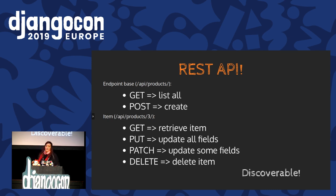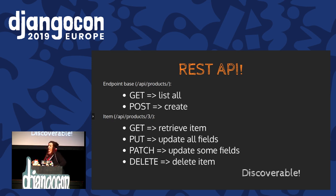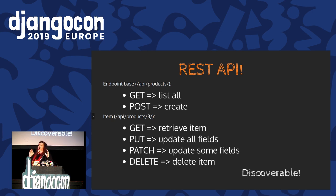Usually, what does a REST API with Django and Django REST framework look like? It's a set of views. One set for collections where you can GET and POST. For example, here we have an endpoint for products — slash API slash product. You can do a GET call on that and get a list of products, or a POST call to create a new product. You also have a detail view — slash API slash product slash the ID — and you usually have four methods: GET, PUT to update the entire product, PATCH to update only certain fields, and DELETE to delete the item.